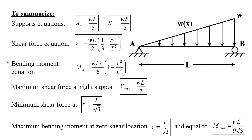To summarize, we have support equations AY and BY as shown. We have shear force equation as shown, the bending moment equation as shown, the maximum shear force at right support, the minimum shear force at X equals L over square root of 3, and the maximum bending moment at zero shear location, which is at X equals L over square root of 3, equal to M equals W L squared over 9 times the square root of 3. I hope that helped, and I'll see you guys in future tutorials.